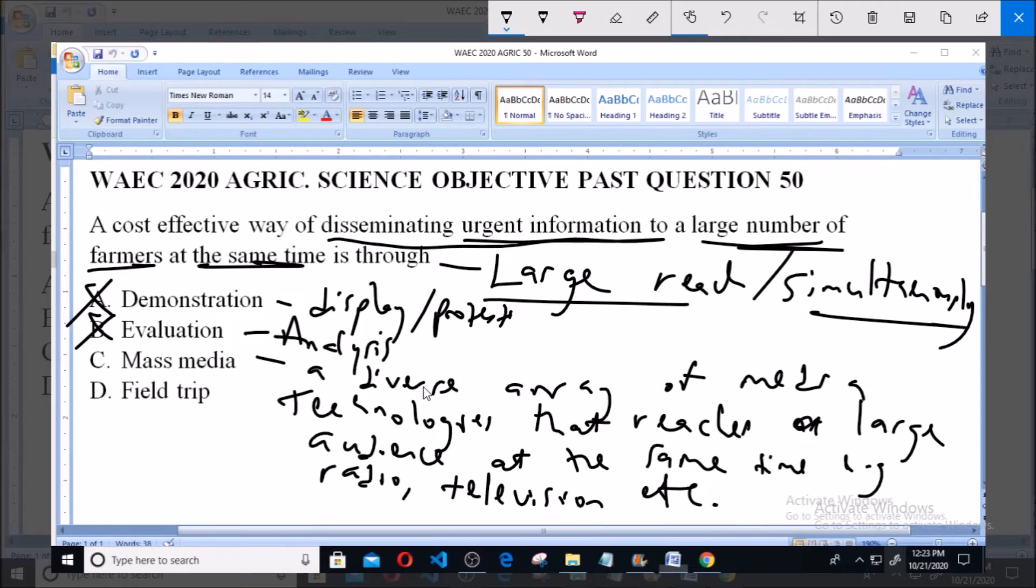As you can see, it reaches a large number of people at the same time, so you can disseminate urgent information to farmers at the same time. So C, Mass Media, is the answer to this question.